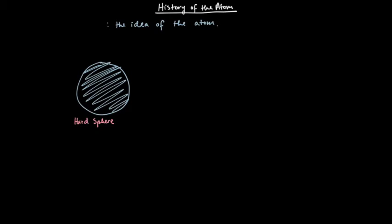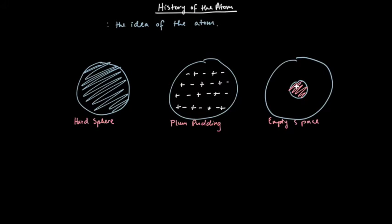J.J. Thompson came up with the plum pudding, where all these protons and electrons were dispersed throughout the atom. Then we had Rutherford with his empty space, where the atom is mostly empty space, except for a very dense positive nucleus.